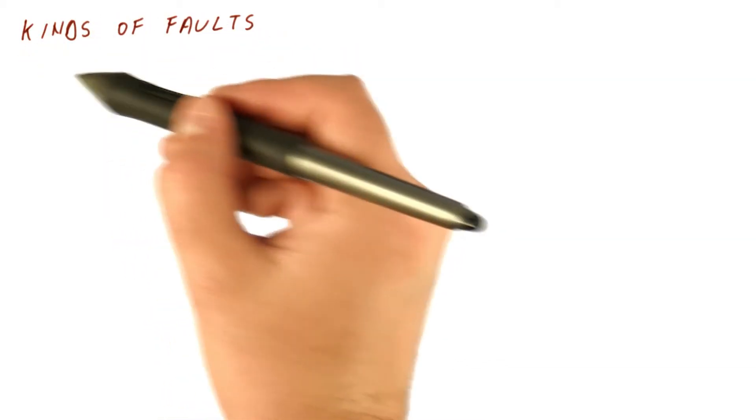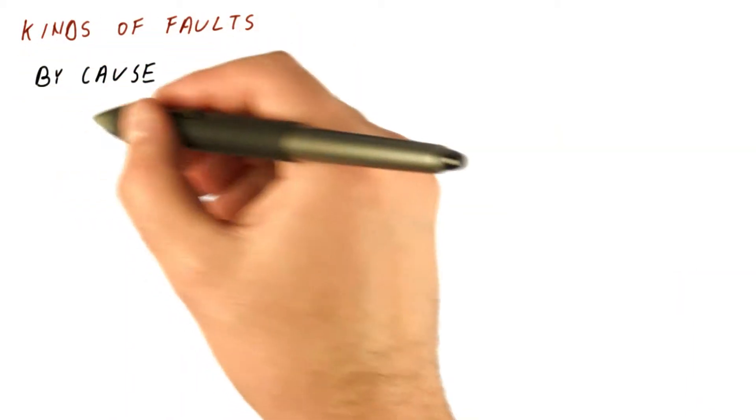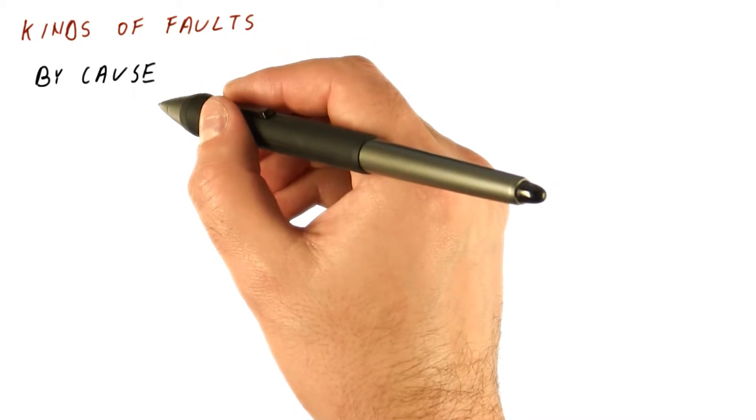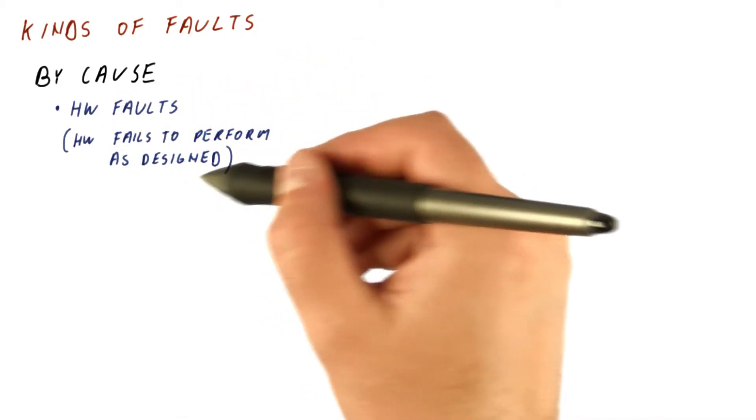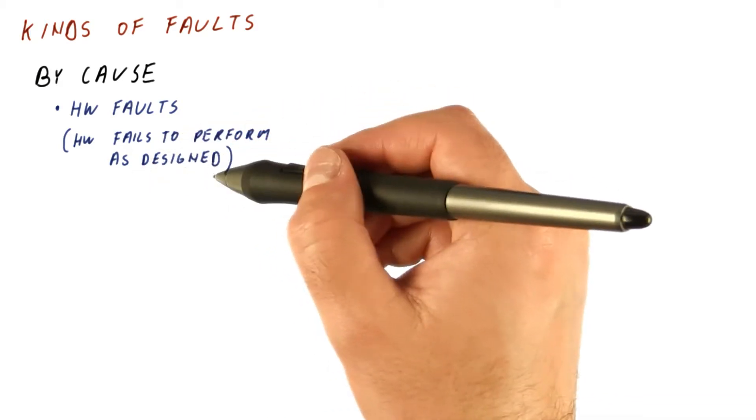So now let's look at what kinds of faults can we have. We can classify the faults by cause, and we can have a hardware fault when the hardware of the system fails to perform as it was designed to do.